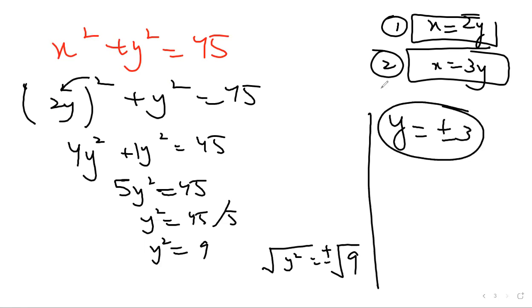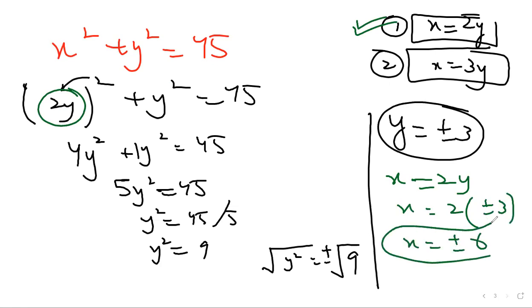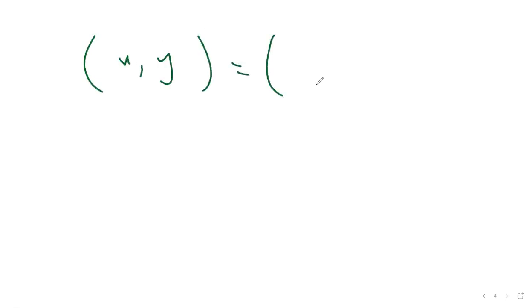Using x = 2y with y = ±3: x = 2 × (±3) = ±6. So the first coordinate solution is (x, y) = (±6, ±3).